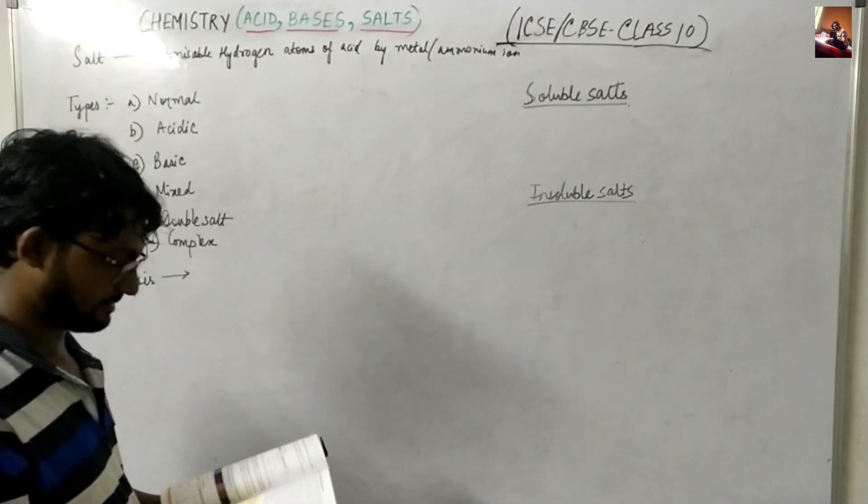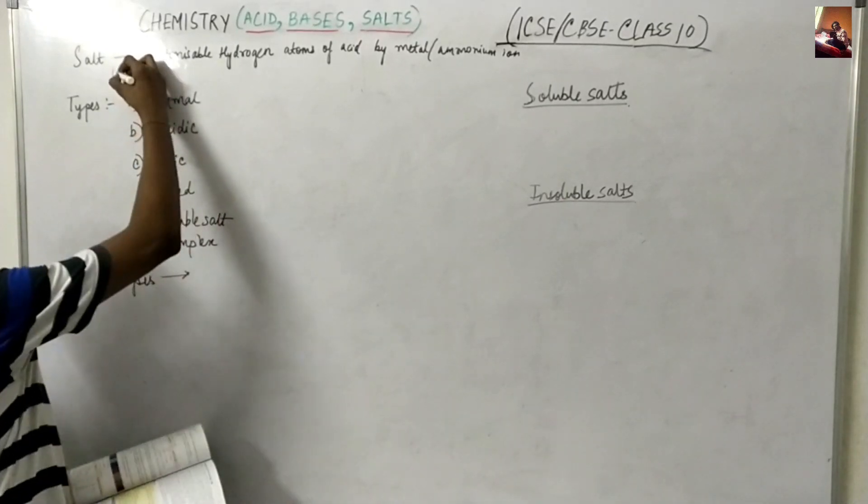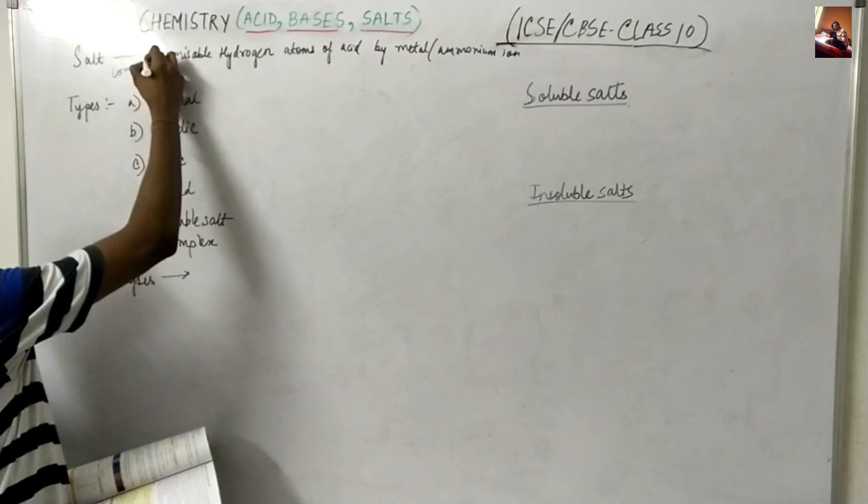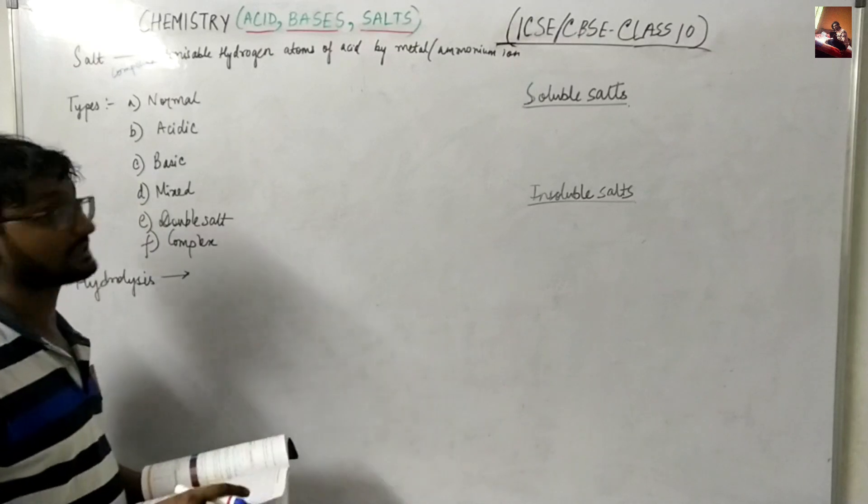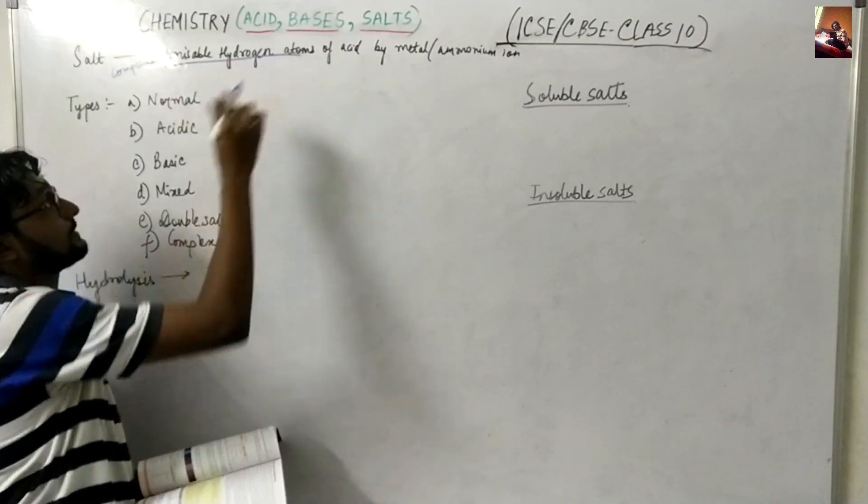So the last part is like salt. What is a salt? It is nothing but a compound that is formed by complete or partial replacement of the ionizable hydrogen atom of an acid by the metal or an ammonium ion.